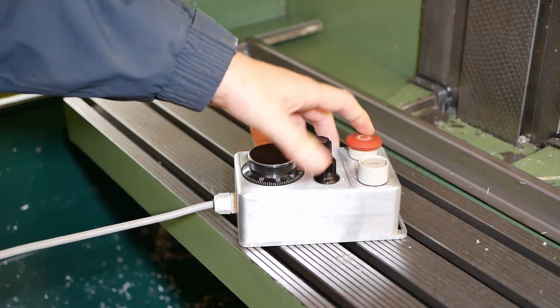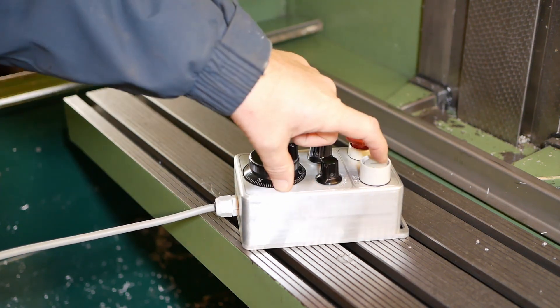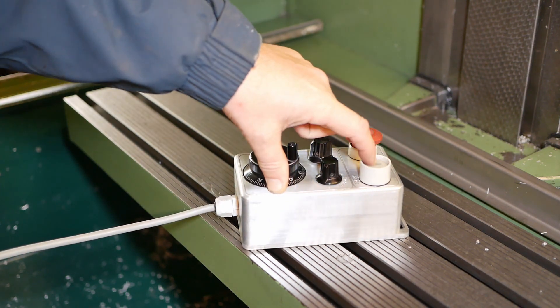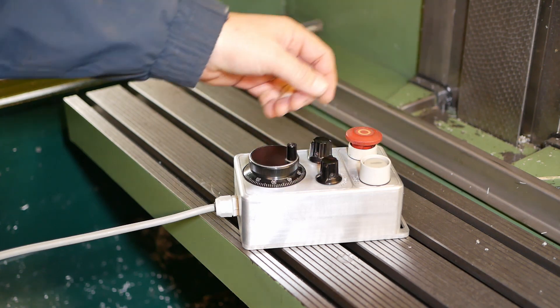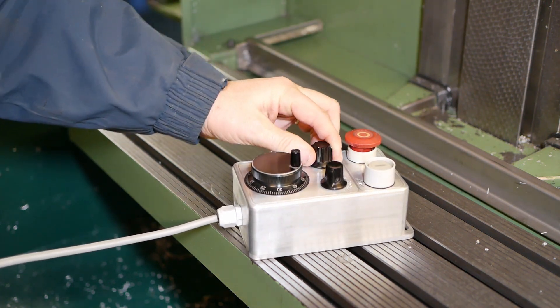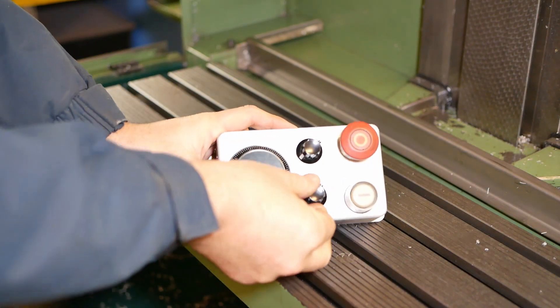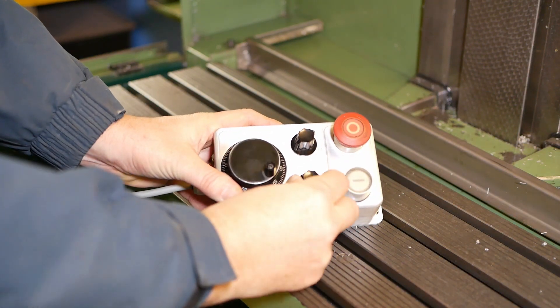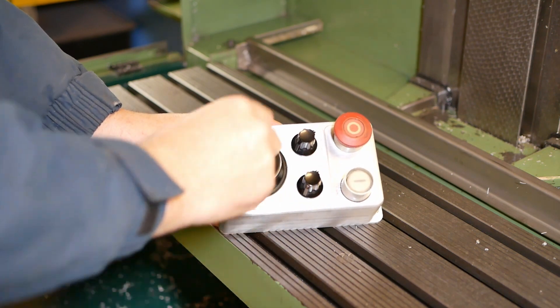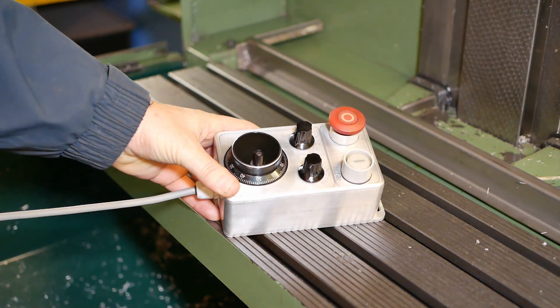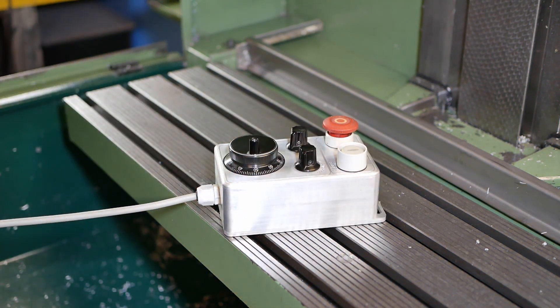I recycled the original e-stop and hydraulic switches from the original Maho control panel, added an axis select switch, a jog interval switch, and an encoder. Now it's been finished for quite a long time.